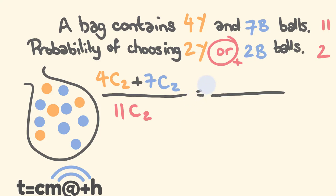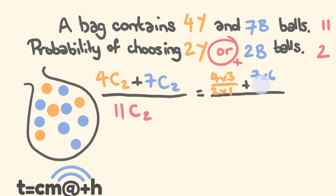Let's work this out. 4C2 = 4×3 over 2×1. This is added — because it's an 'or' — to 7C2: 7×6 over 2×1, since we're only coming out two times. All of this goes over 11C2: 11×10 over 2×1.